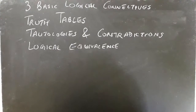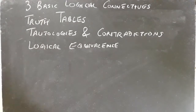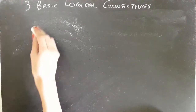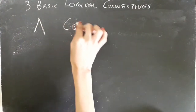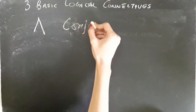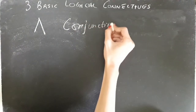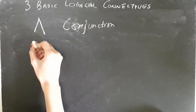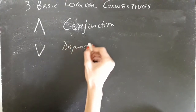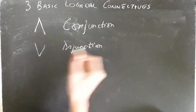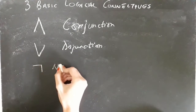We will learn the three basic logical connectives, truth tables, tautologies and contradictions, and logical equivalents. The basic logical connectives are conjunction, disjunction, and negation.